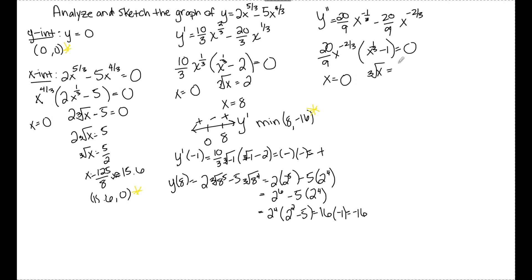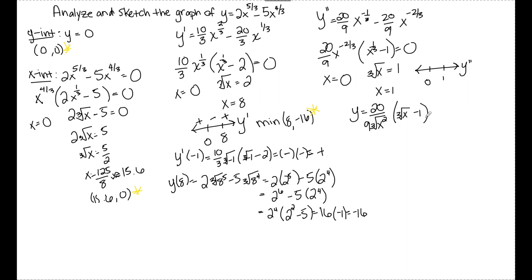The second factor gives the cube root of x equals 1, so cubing both sides gives x equals 1. These are my two possible points of inflection: x equals 0 and x equals 1. I place them on a number line labeled y double prime. I rewrite the factored form as (20/9) divided by the cube root of x squared, times (cube root of x minus 1), which is friendlier for evaluation. Testing negative 1: the cube root of negative 1 squared is positive, and cube root of negative 1 minus 1 is negative. Negative times positive is negative — so y double prime is negative to the left of 0.